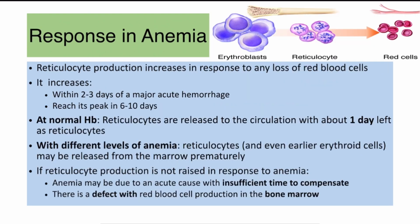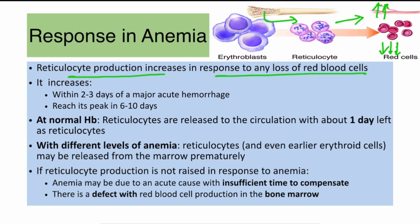In response to any loss of red blood cells, there will be increased production of reticulocytes. When red cells decrease in number due to anemia, the bone marrow tries to increase RBC production, sending more reticulocytes into circulation. This typically occurs within 2 to 3 days of major acute hemorrhage, with a peak response around 6 to 10 days.